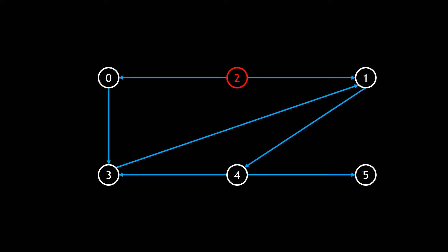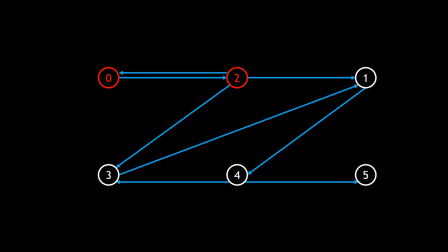Let's look at a couple of examples to clarify the problem. For this graph we notice there is a single mother vertex, vertex 2, highlighted in red. This fits the definition because from vertex 2 there is a path to every other vertex in the graph. All other vertices are not mother vertices. For this second graph there are multiple mother vertices, colored red, and for any of these you can reach all other vertices.